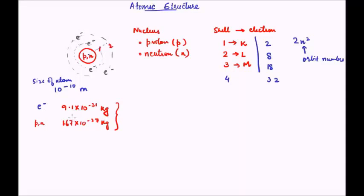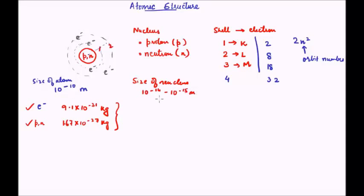Now let us see in detail how the nucleus is arranged. The nucleus, as we saw, has protons and neutrons. As we can see from the masses, most of the mass is concentrated in the nucleus — the nucleus is basically the mass center of an atom, and electrons are the light particles which orbit the mass center. The size of the nucleus is around 10⁻¹⁴ to 10⁻¹⁵ meters, which is roughly 10⁵ orders smaller than the atom. So the complete mass of the atom is focused in a very small area at the center.